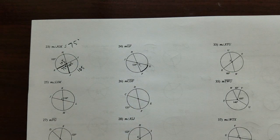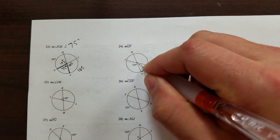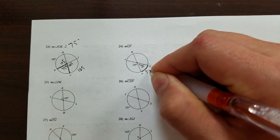Well, 180 minus 125, which is 55 degrees. If that's 55, this is 55.